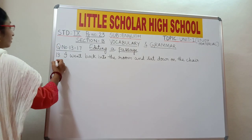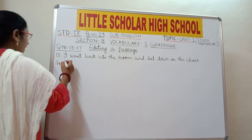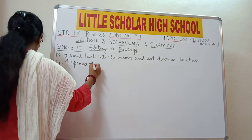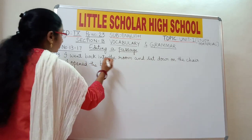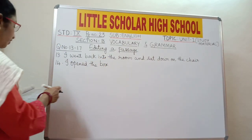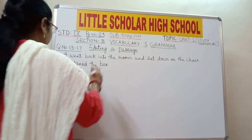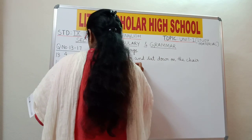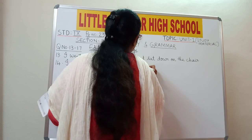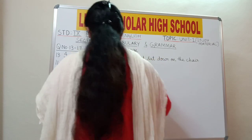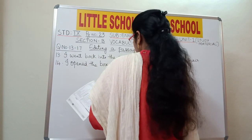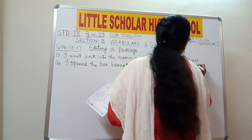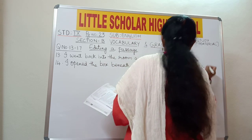So for question number 14, write: 'I opened the box beneath the table and took out a book.' In place of 'below,' it should be 'beneath the table.'